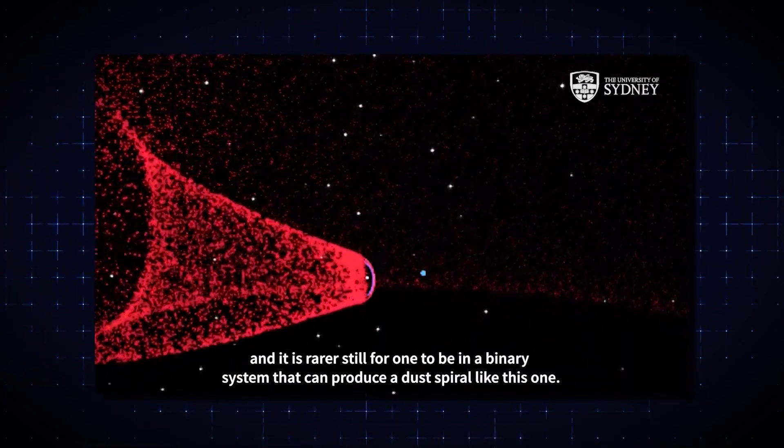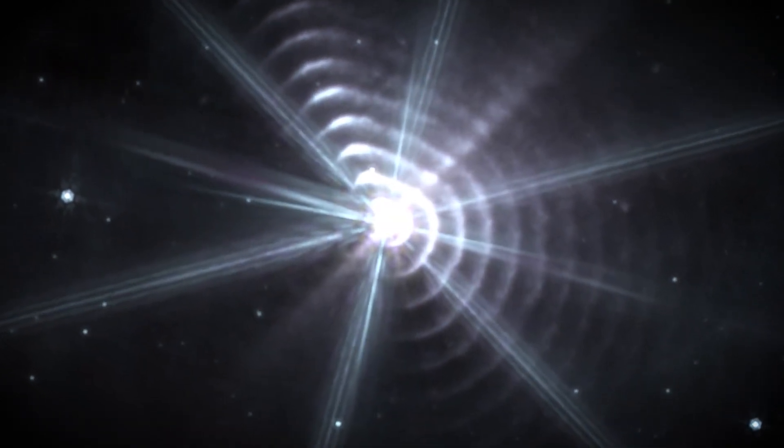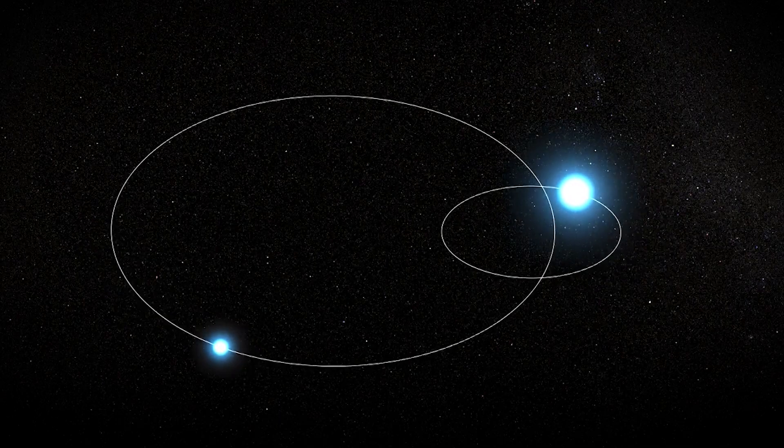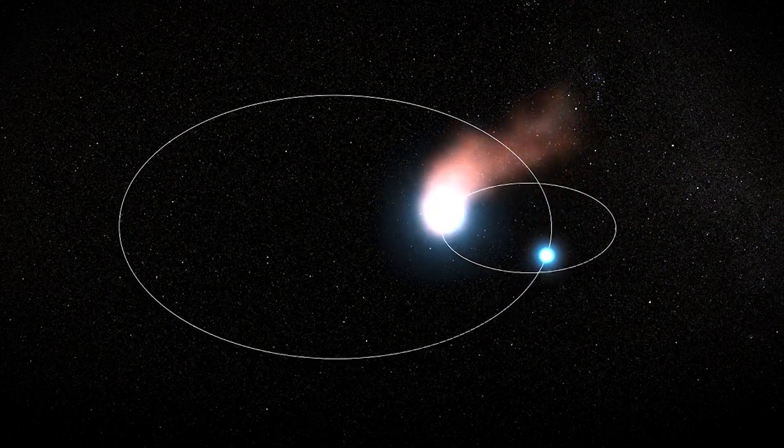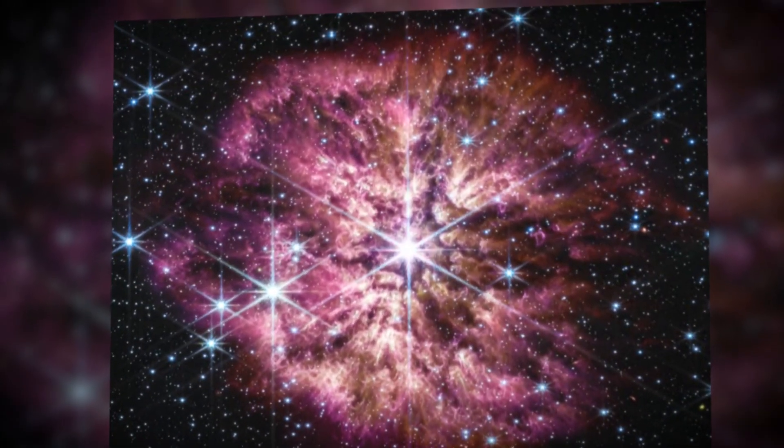The thing about Wolf-Rayet stars is that these massive bodies are often at the end of their lives because they've already given out so much of their energy. So these mysterious boxy ripples are certainly interesting to see because it could mean that the WR 140 might have just interacted with its small companion star, although how it affects space and eventually us is still a mystery.